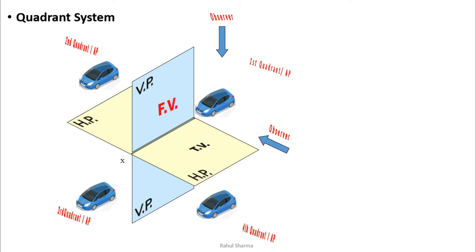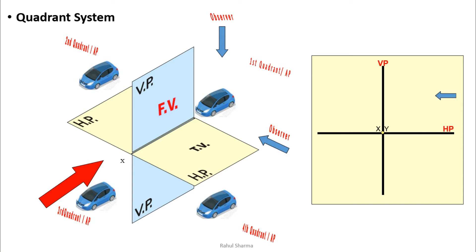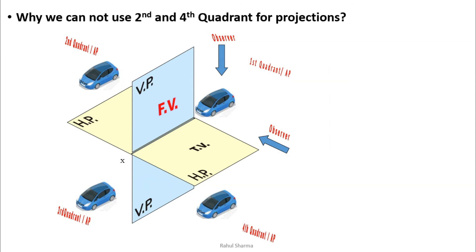To make the orthographic projection, we use the same quadrant system discussed for projection of points and lines. The object is placed in the first, second, third, or fourth quadrant. VP and HP are perpendicular principal planes. The observer stands in a standard position for front view and another for top view. The front view goes on VP, top view on HP. The quadrants are arranged anti-clockwise.